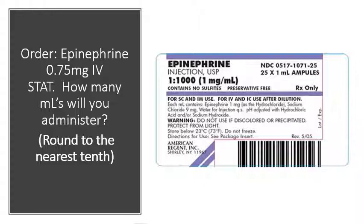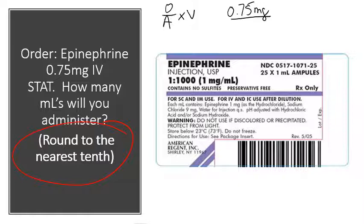This calculation requires reading labels carefully. The order is epinephrine 0.75 milligrams IV stat. How many mLs will you administer? Round to the nearest tenth. Using order over availability times volume: order is 0.75 milligrams, available is 1 milligram per 1 mL. This is just a ratio — use it to solve the problem.